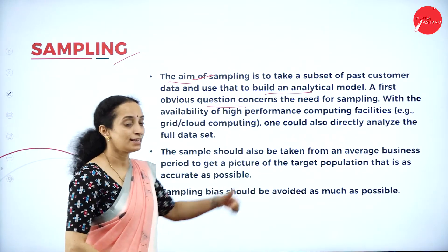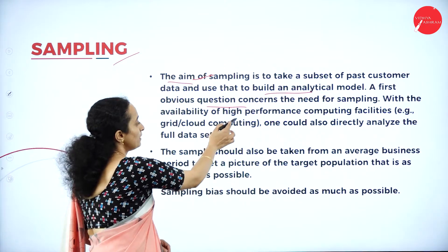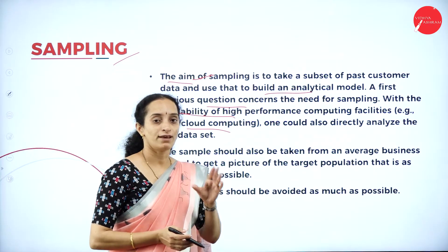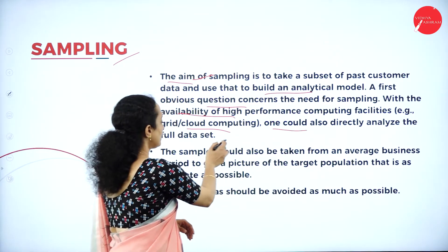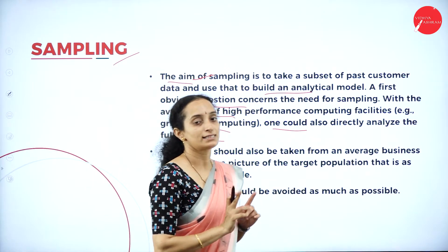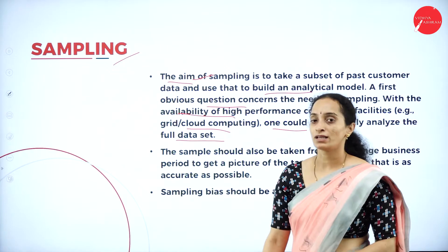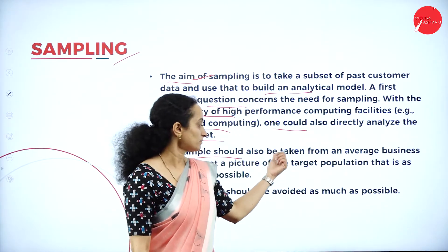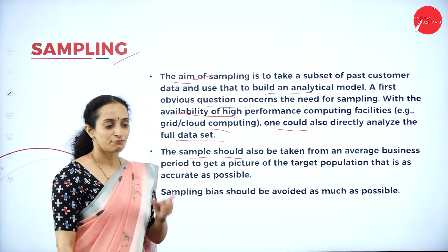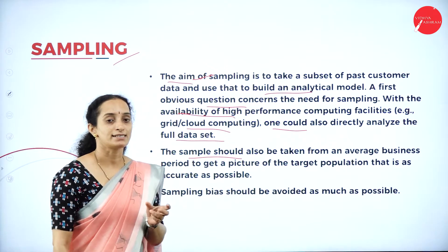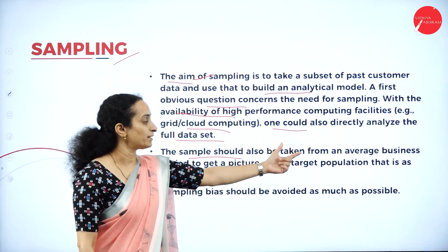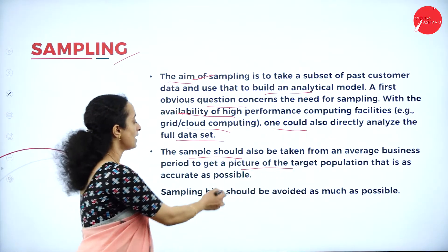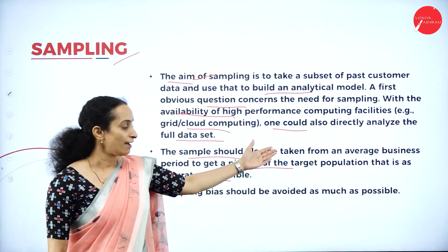The first question is the need for sampling. Why do you need sampling? With the ability of high performance computing facilities like grid and cloud computing, where everything is online, one could also directly analyze the full data set, which is available in the cloud or grid computing enabling you to access the past history of customer data. The sample should be taken from an average business period to get a picture of the target population that is as accurate as possible.